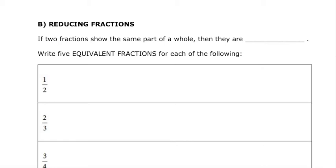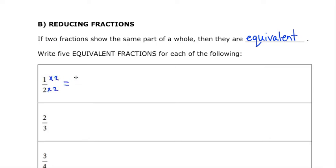Moving on, we'll take a look at fractions now. If two fractions show the same part of a whole, then they are what we call equivalent. To find equivalent fractions, we either want to make the fractions bigger or smaller. For 1 over 2, I can't make it smaller because this is already in lowest terms. I can write equivalent fractions by making them larger, multiplying the numerator and denominator by the same constant value. Multiplying by 2, I get a new fraction of 2 over 4.